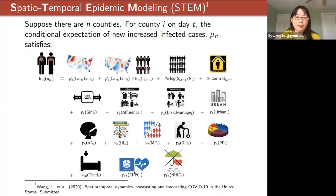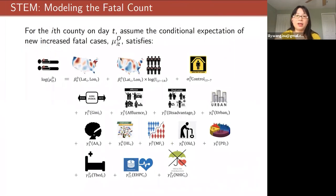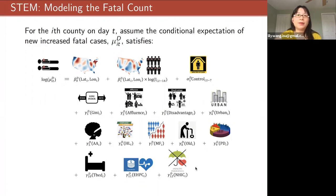This is the first part of our modeling framework for the infection count. We did something similar for the death count — a similar model where instead of modeling the infectious count, we model the new increase in fatal cases. Similarly, we allow this fatality rate to vary from location to location, and you can put different county-level features in as well.